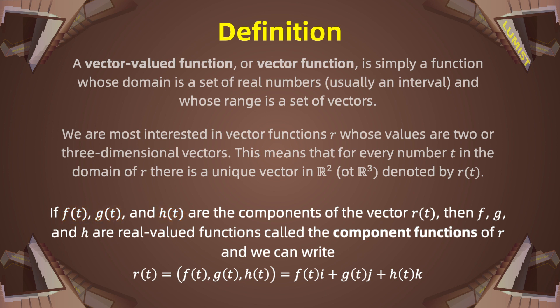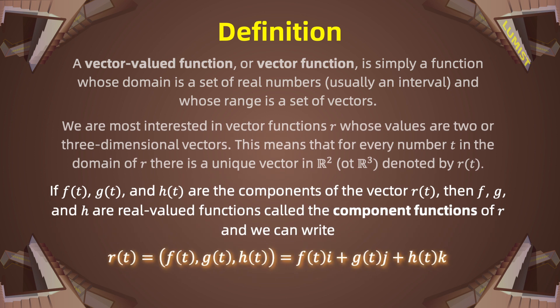If this is the case, then we can express the image of t through R as the vector whose components are f, g, and h. Remember that any vector can also be written as f times i plus g times j plus h times k, where i, j, and k are the standard basis vectors.